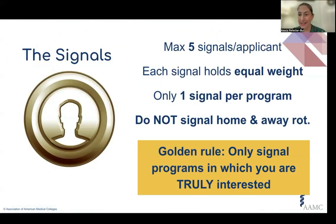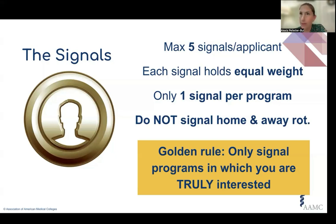Things have been changing very quickly from year to year. For your signals, you only get five this year. Last year, applicants received seven signals. The reason we went back to five is that our guidance has returned to our original approach regarding home and away. When we first started signaling two years ago, we said do not signal your home and away institutions — you get five signals — because home and away institutions are typically very high yield in terms of getting an interview offer, and we did not want applicants wasting their signals on those.